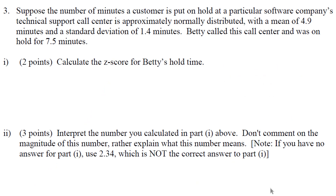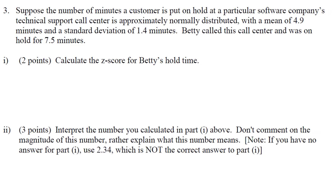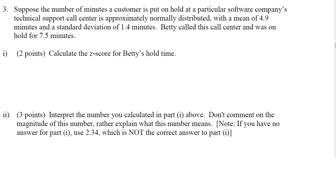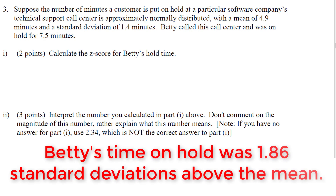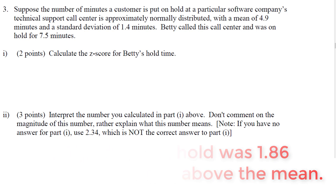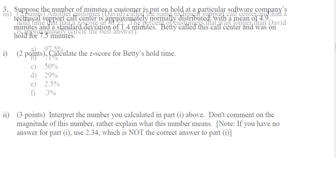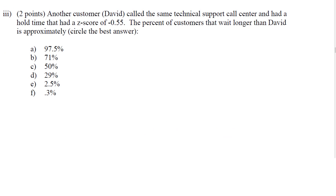This is actually question number two, which simply wants you to interpret your z-score. A z-score is just how many standard deviations an observation is above or below the mean. So the answer is: Betty was 1.86 standard deviations above the mean.